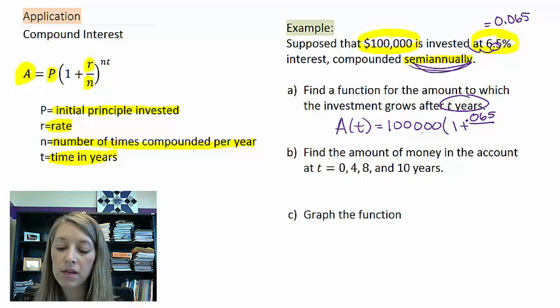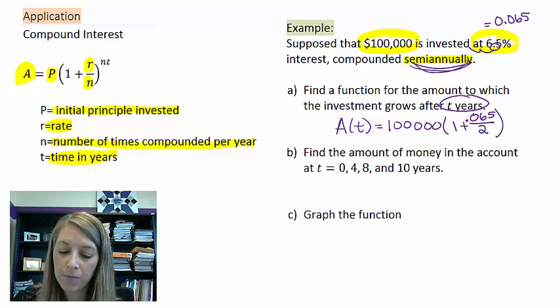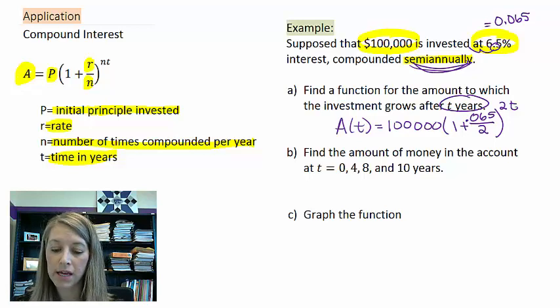So semi-annually means it's done twice a year. And then that is to the exponent to the two t. Two stands again twice per year, and t is our unknown in this case.